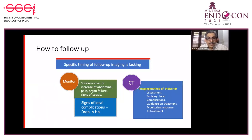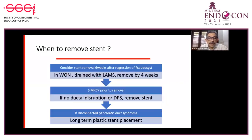Specific follow-up timing is lacking, but patients can be monitored for any new symptoms, organ failure, or signs of sepsis and local complications. CT is the imaging of choice for follow-up. Regarding stent removal: LAMS should be removed by four weeks. For pseudocyst stents, removal is considered at six weeks after regression. A secretin-enhanced MRCP is advised prior to removal; if there is no ductal disruption, the stent can be removed. In disconnected pancreatic duct syndrome, long-term plastic stent placement helps.